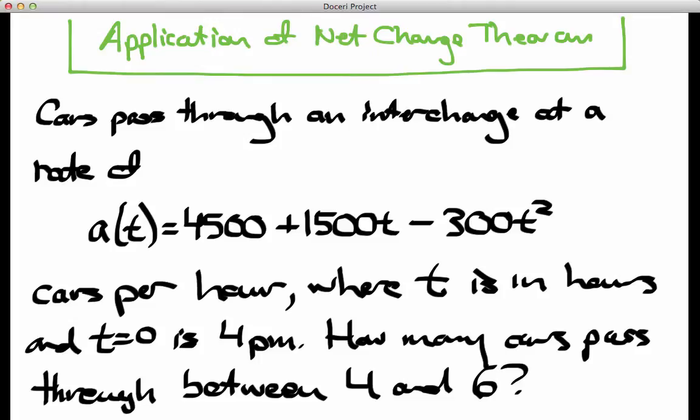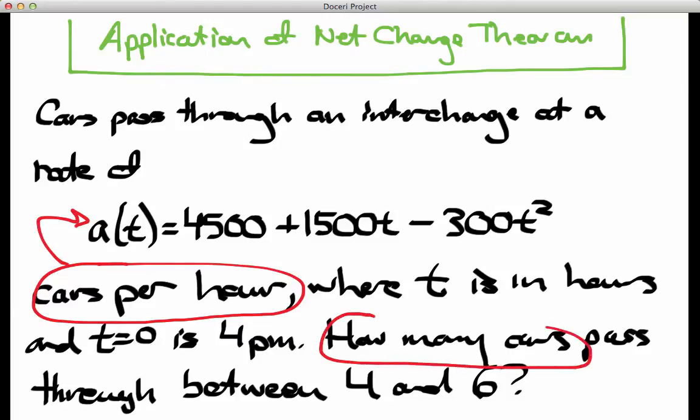First of all, realize this is a classic setup for an integral. Remember, it's like starting with a velocity and ending up with a distance traveled. So here we're starting with a rate of change. We're given a rate of change in cars per hour, and that's what this function tells us. And we're being asked for a total change, how many cars pass through between 4 and 6. If the situation were reversed and we were given a quantity and asked to find its rate of change, that would be a derivative question. But here, since we're given the rate of change and asked to find a total change in the quantity, or a net change in the quantity, that is going to be an integration problem.